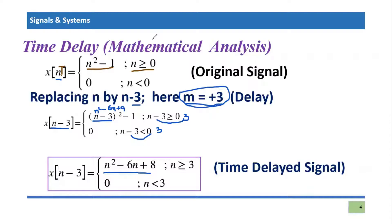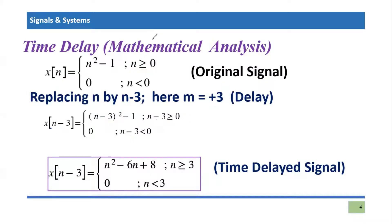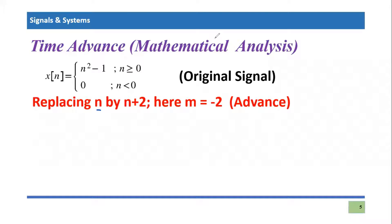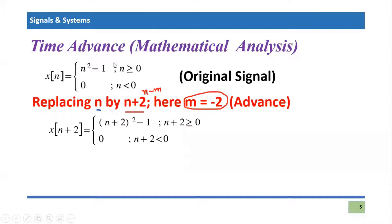Now let's perform the time advance operation mathematically. For the same original signal, I replace n with n+2. Comparing with the general replacement n-m, we see that -m = 2, so m = -2. A negative m means a decrement in the time domain, producing a time-advanced version of the signal.